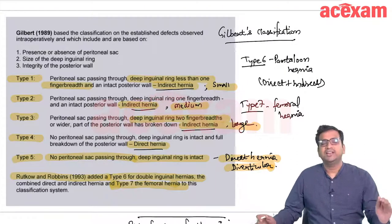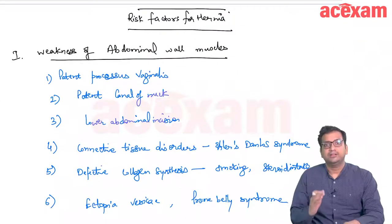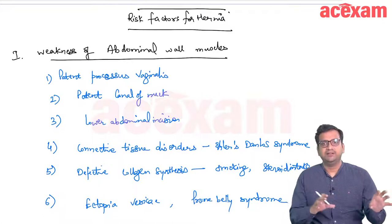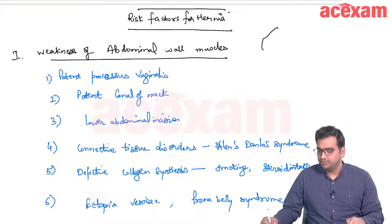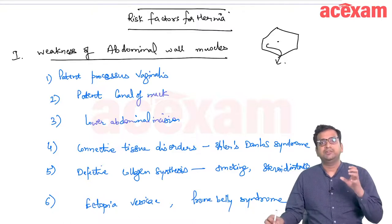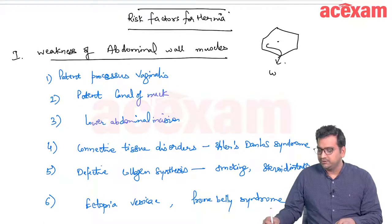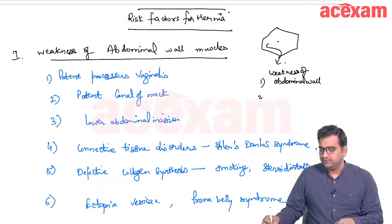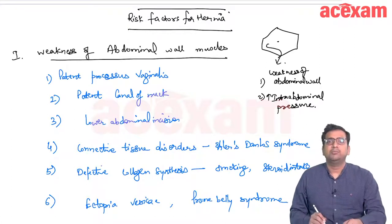Now knowing indirect, direct, and the classifications, we discuss risk factors for hernia. Two important factors determine hernia development: first, inherent abdominal wall weakness; second, increased intra-abdominal pressure. For a hernia to develop, the wall should be weak and the intra-abdominal pressure should be elevated.